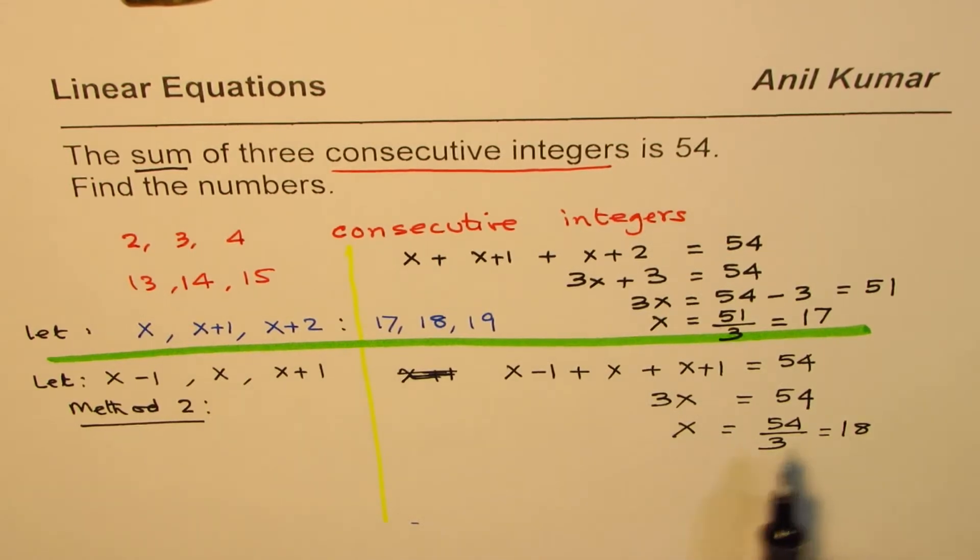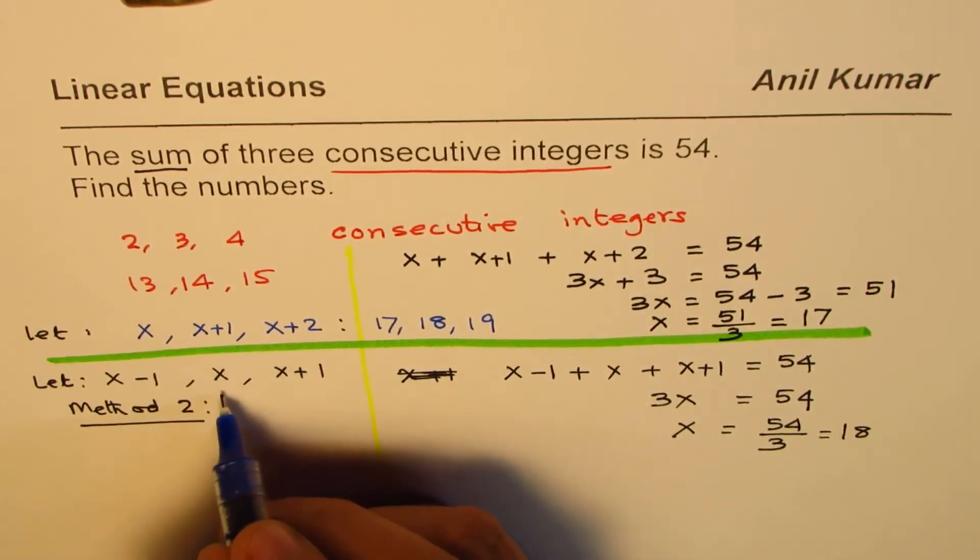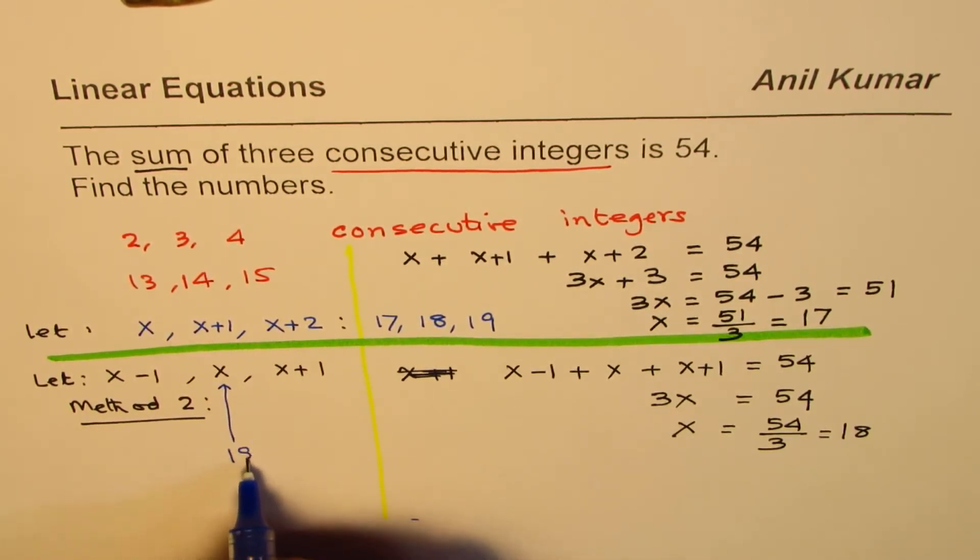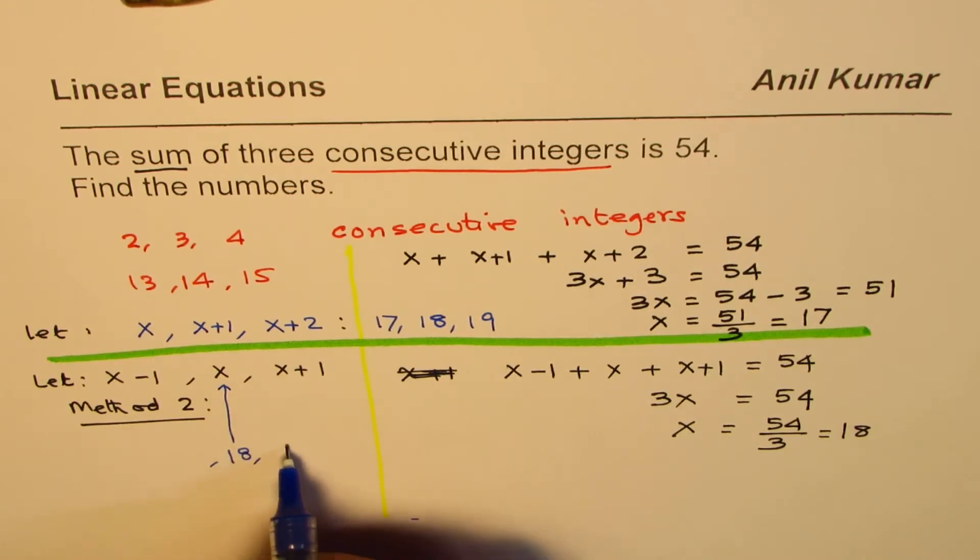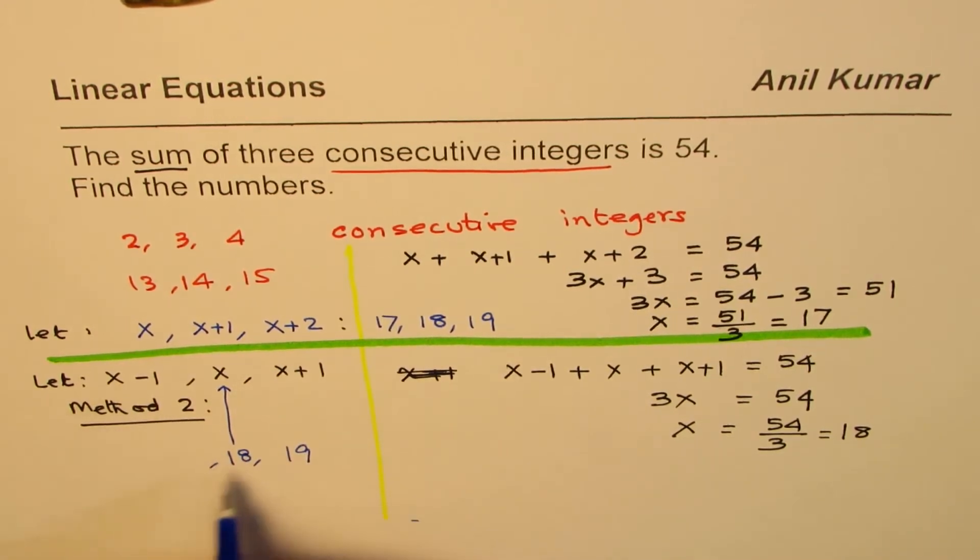Now, if x is 18, what are my three numbers? Let me write down here. My numbers were to start with x is 18. So, the number on the right side is 1 more than 18, which is 19. And on the left side is 1 less than 18, which is 17. So, I still get the same set of numbers.